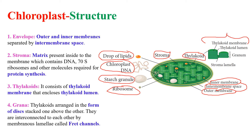Next are thylakoids. Thylakoids consist of a thylakoid membrane which encloses the thylakoid lumen. Arrangements of thylakoids in the form of discs are known as grana. These grana are interconnected to each other by stroma lamellae, which is also known as fret channels.